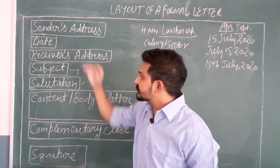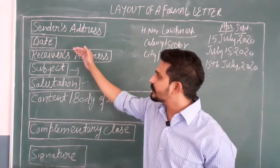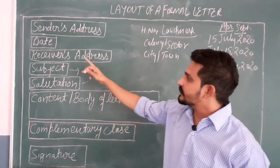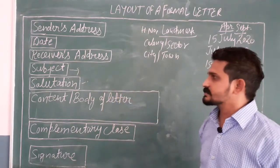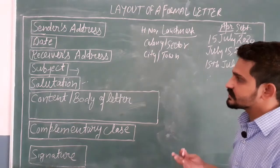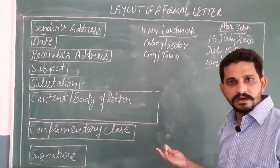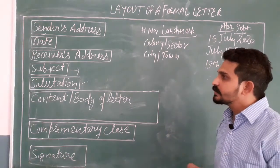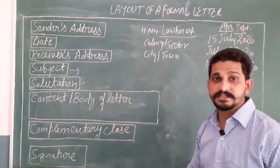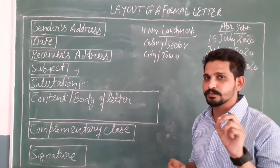After the date, leave two blank lines, and then write the receiver's address — the one who will receive the letter. It may include their designation, name of the company, and the place, like Delhi, Bhopal, Maharashtra, or whatever it may be. Then after leaving one line, write the subject. The subject is about what topic you are writing the letter, and it should be very brief and to the point.